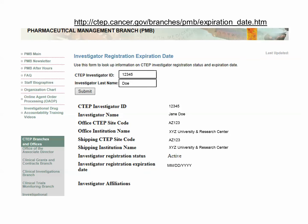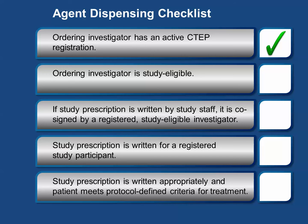This is an example of an investigator with an active CTEP registration status. Note that this investigator does not have any current affiliations. Investigator affiliations indicate eligibility to participate on roster participant protocols. The next step requires a copy of the current version of the protocol in addition to the investigator registration status search results in order to verify that the ordering investigator is study eligible to participate on the trial.